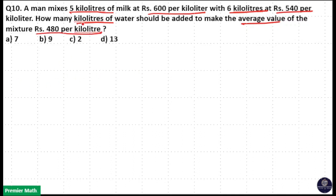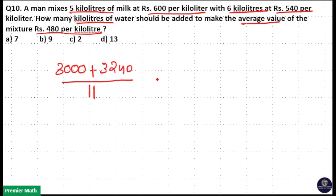Here you don't need to use alligation — you can directly develop an equation from the question itself. Total 5 plus 6 is 11 kilolitres of milk. The price of this 11 kilolitres is equal to 5 into 600 = 3000, plus 6 into 540: 6 into 500 = 3000, 6 into 40 = 240, that means 3,240. So for 11 kilolitres of milk, the total price is 6,240.